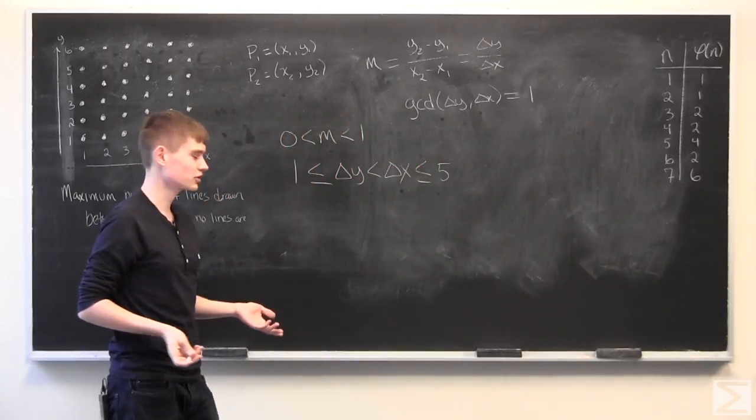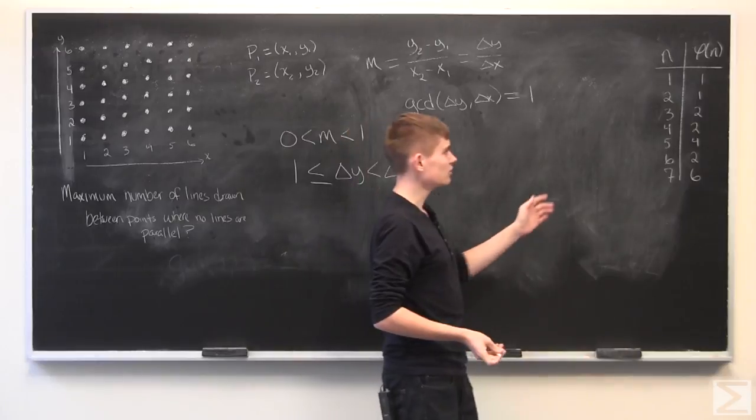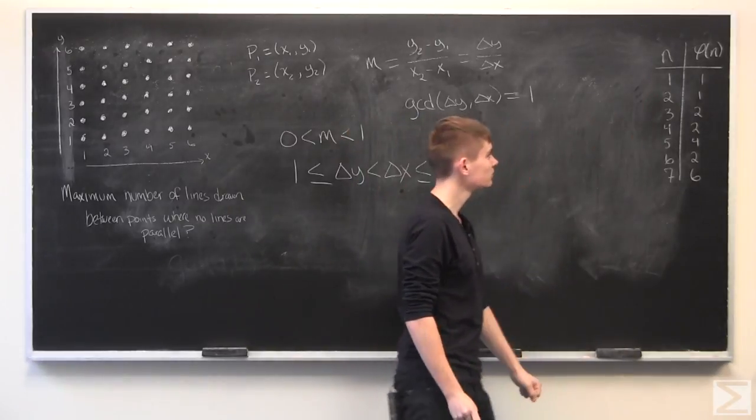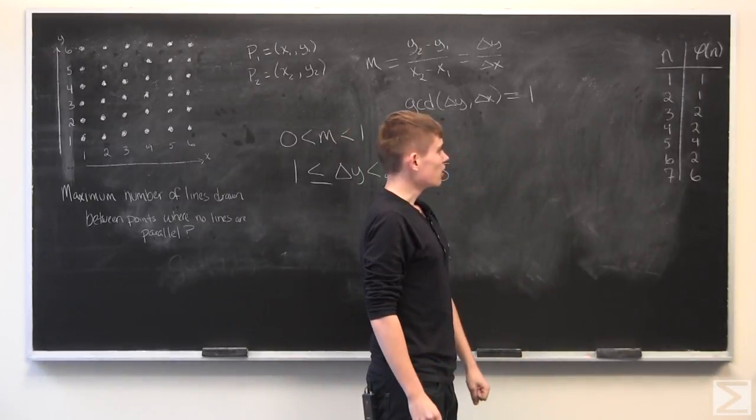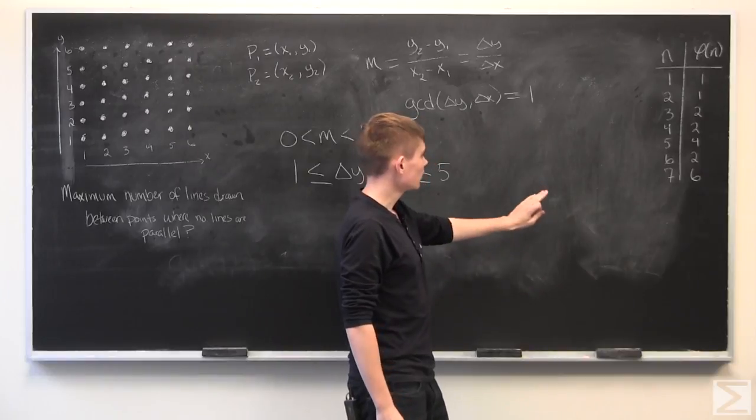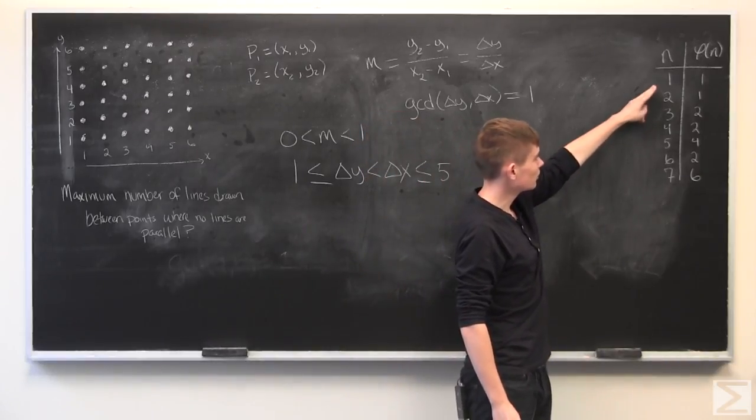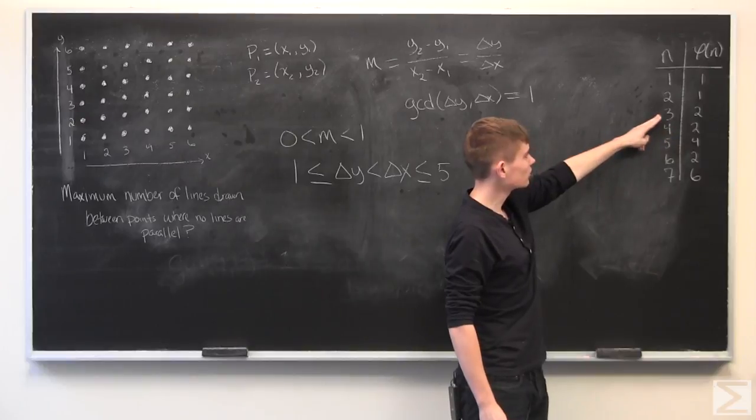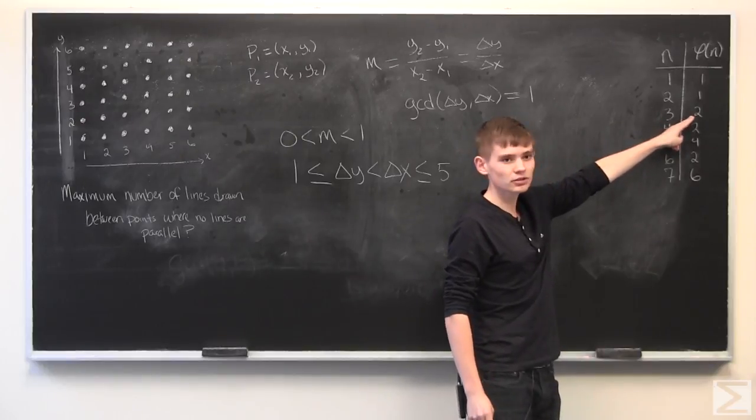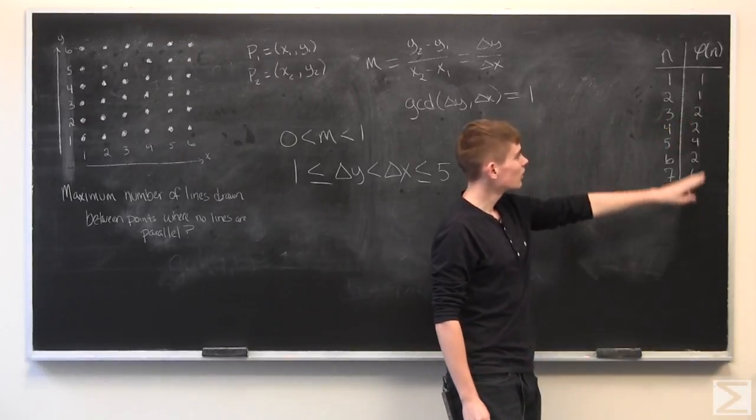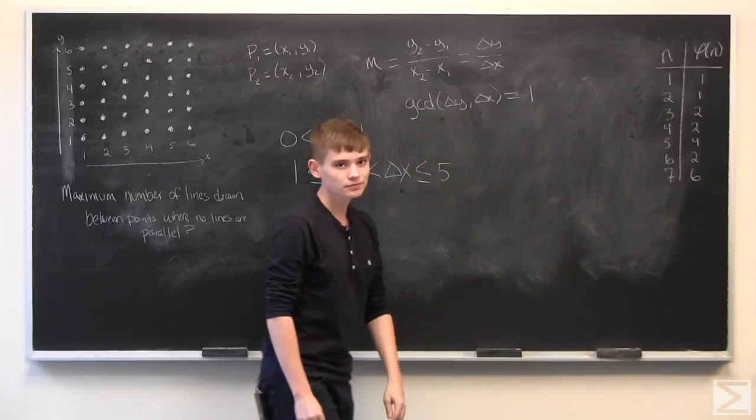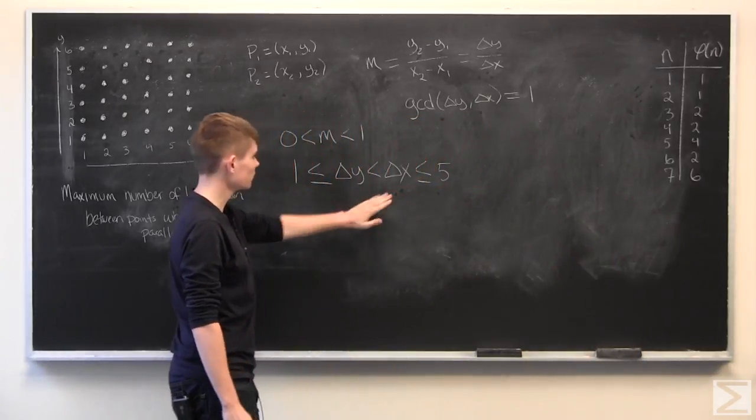And luckily, there is a function that does that. It is the Euler-Totient function. And all it does is, if you give it an input, let's say 3, it'll tell you the number of natural numbers less than 3 that are relatively prime to 3, which is exactly what we're looking for.